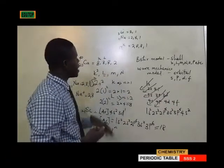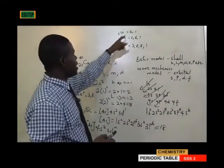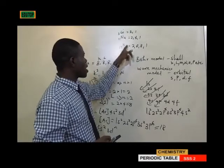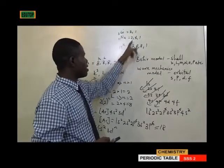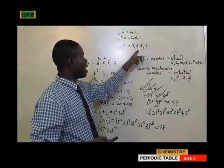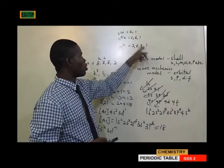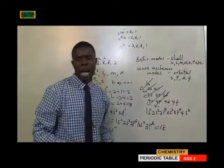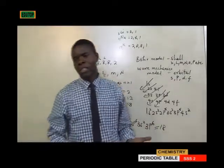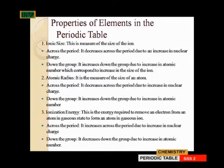As we go down the group, atomic number increases, and as atomic number increases, the number of shells increases. As the number of shells increases, the size of the atom also increases. Atomic radius is a measure of the size of an atom.